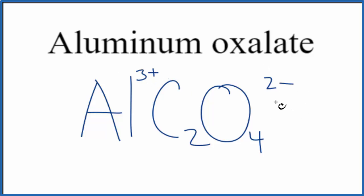Three plus and two minus doesn't add up to zero. One way to balance this is to use the crisscross method. We move the two down here as a subscript, then the three over here, and we need to put parentheses around the oxalate ion.